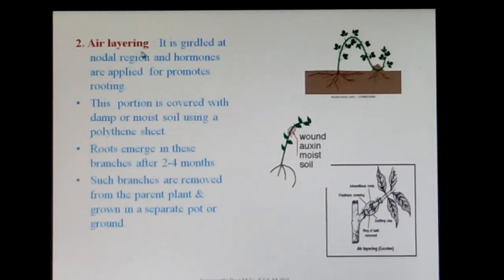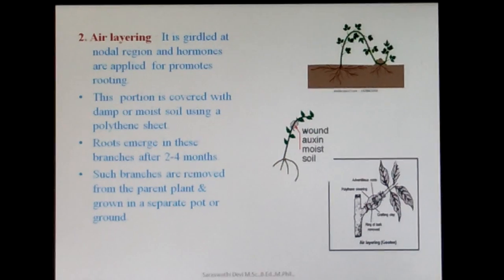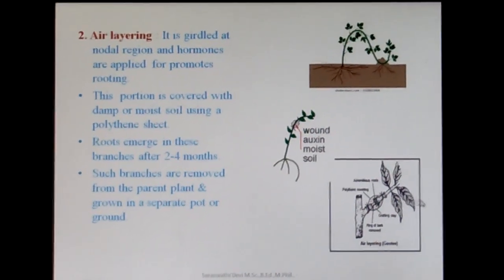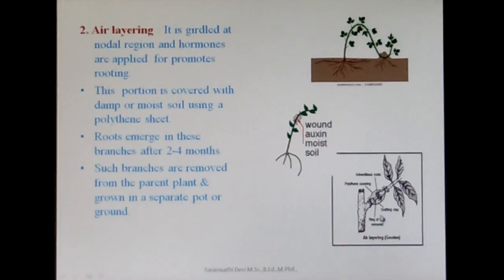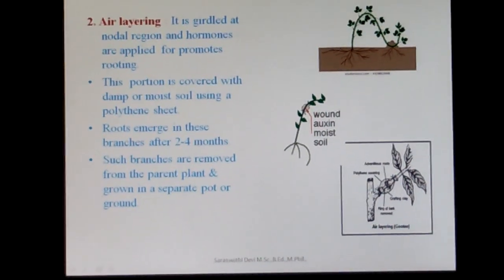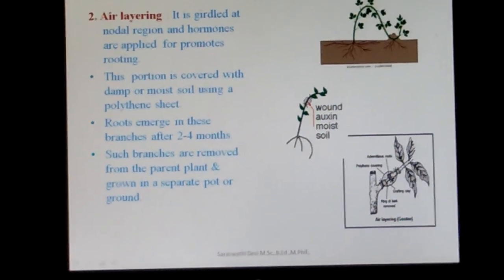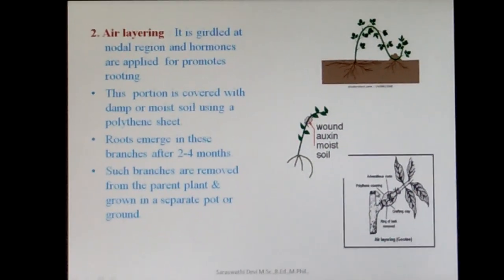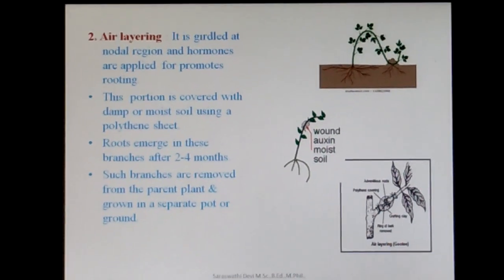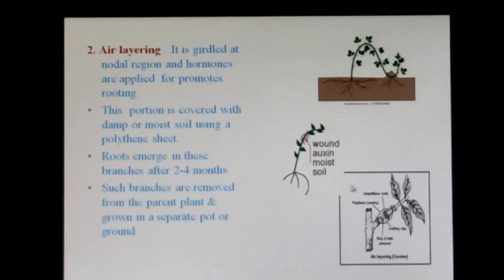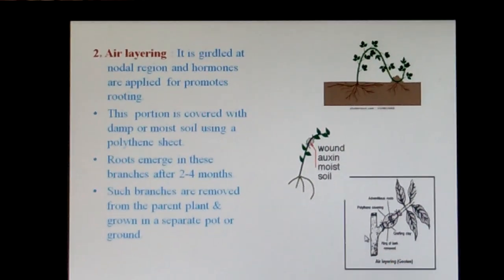The second type is air layering. Here, at the node region of the plant, a girdling is done. Plant hormones such as auxin are applied to the girdled area to encourage rooting. Moist soil is packed and covered with a polythene sheet. After two to four months, roots are visible at the girdled area. When roots appear, the branch is cut and cultivated separately to produce a new plant. This type of layering is called air layering.